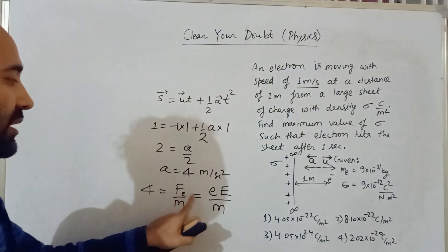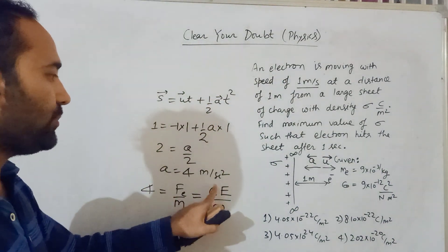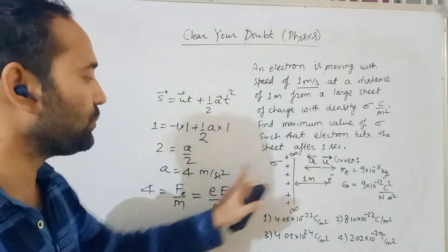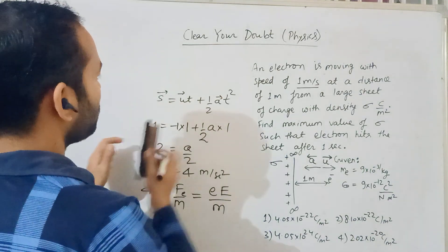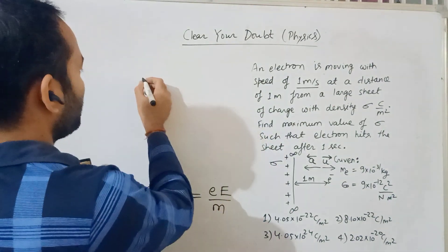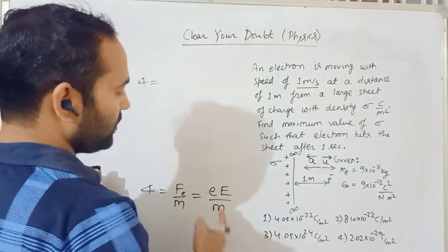Look, don't put the electron's negative charge value and then add vectors - you've already included it in the vector form. You've already taken a's direction as positive, so we write: 4 = eE/m.